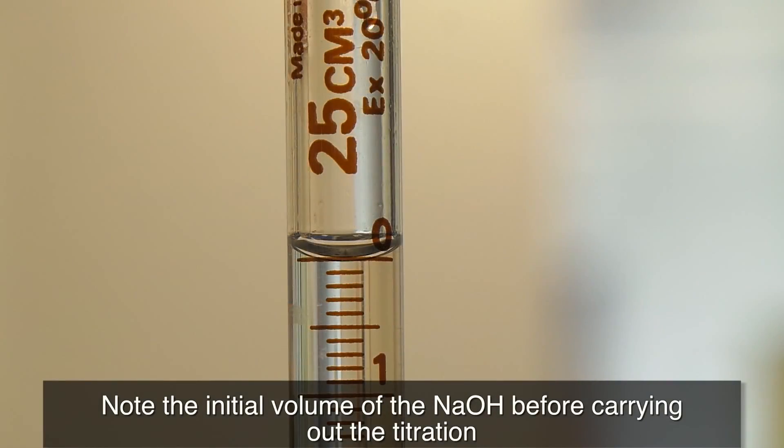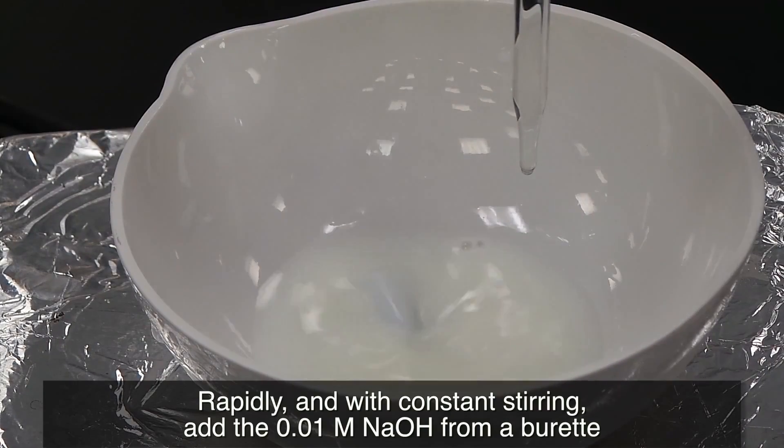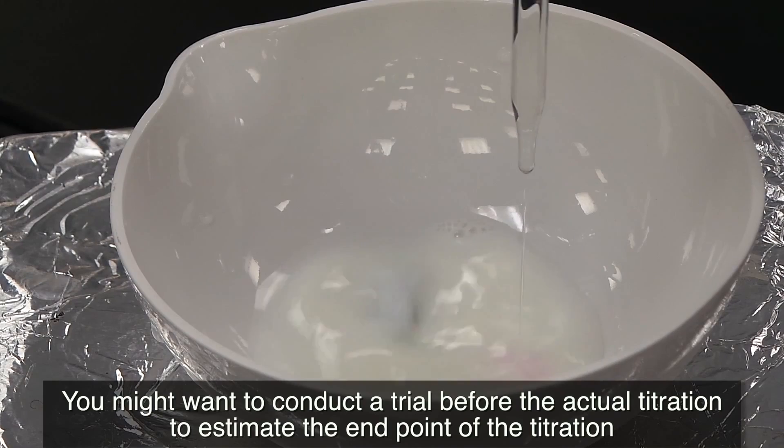Note the initial volume of the NaOH before carrying out the titration. Rapidly, and with constant stirring, add the 0.01 mol NaOH from a burette. You might want to conduct a trial before the actual titration to estimate the end point of the titration.